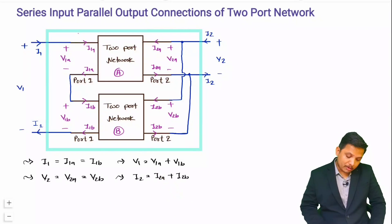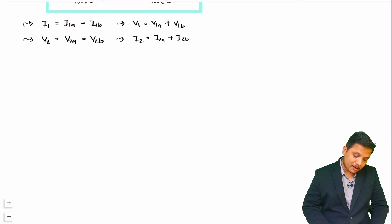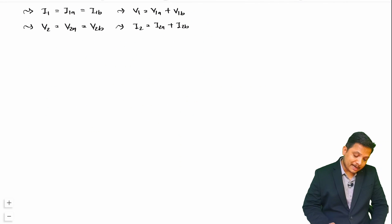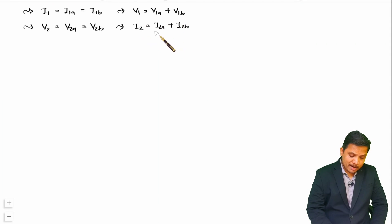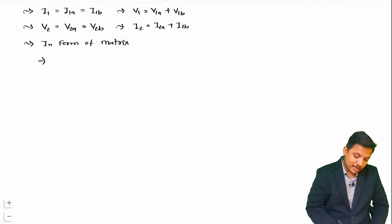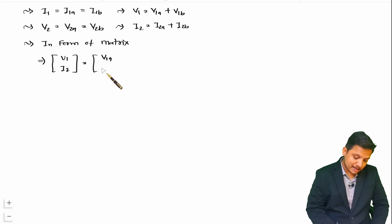Now we can use these equations to find the relation for the equivalent network. These equations are in the form of an algebraic sum, so I can write them in matrix form. In matrix form: [V1, I2] equals [V1A, I2A] plus [V1B, I2B].